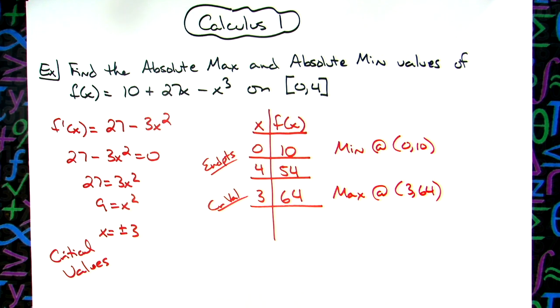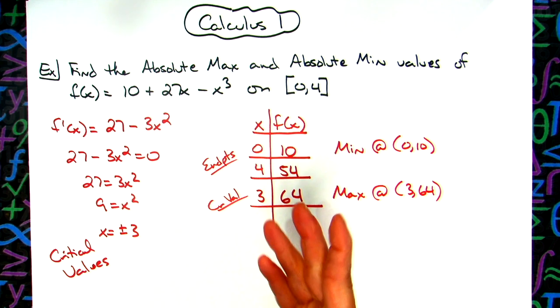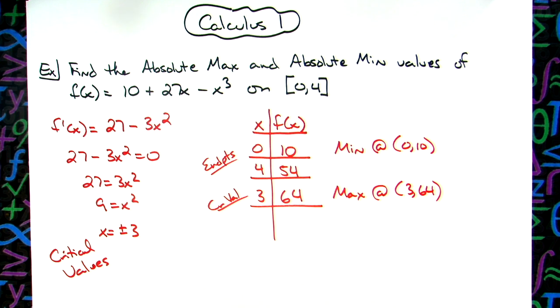So a pretty straightforward problem here, but you do have to know that you have to test critical points and endpoints in an xy table where you are looking at that original function to be able to find these. Thanks for watching. If the videos are helping, please share with your friends so they can benefit too. And don't forget to subscribe to the channel. Thanks.